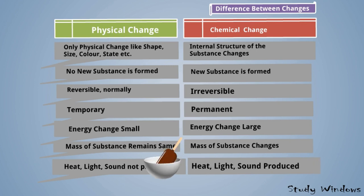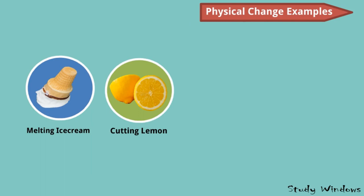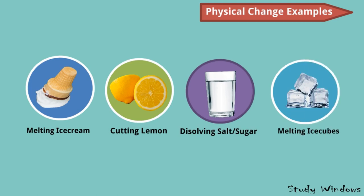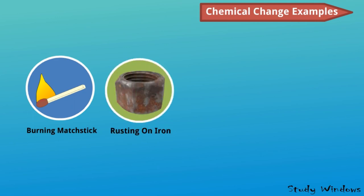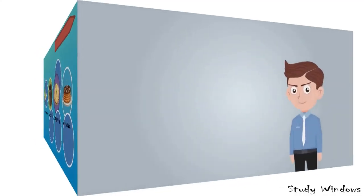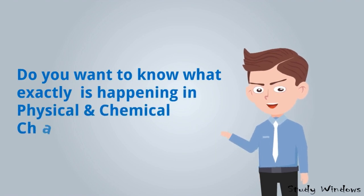Examples of physical change include: melting ice cream, cutting a lemon, dissolving salt or sugar in water, and melting ice cubes. Examples of chemical change include: burning a candle, rusting of iron, cooking an egg, and baking a cake. Do you want to know exactly what is happening in physical change or chemical change?